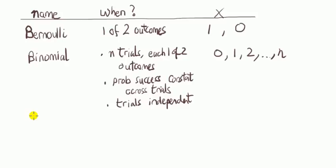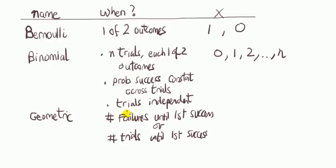Next, the geometric distribution. The geometric distribution is also based on the Bernoulli, and it can be expressed in two ways. It can be described as the number of failures until we get our first success, or it can be described as the number of trials needed until the first success, where each trial has one of two outcomes.